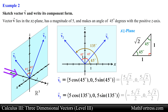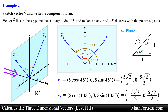Using these angles we can compute the values of each component using the ratios of a 45-45-90 special triangle, then multiply by the magnitude of the vector. For the first vector we obtain 5 times the square root of 2 over 2, 0, and 5 times the square root of 2 over 2. For the second vector the values are the same, but the x component will be negative since cosine of 135 degrees yields a negative value.